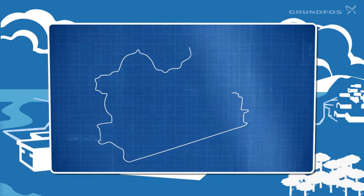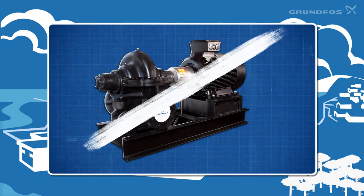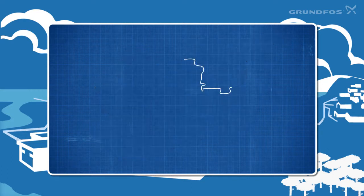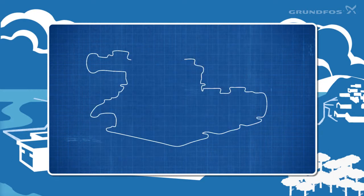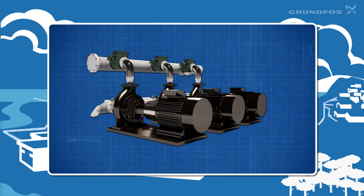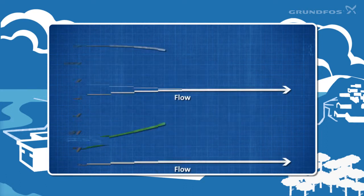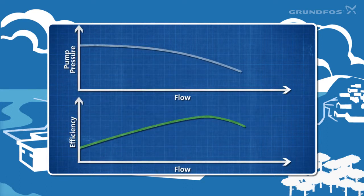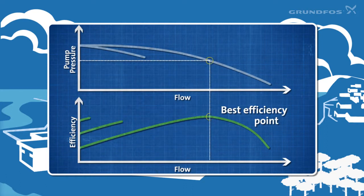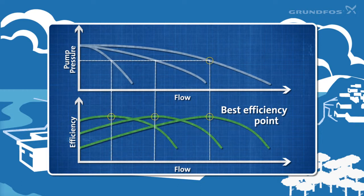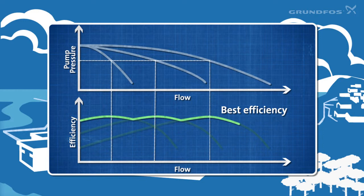Instead of a single large pump running at only one best efficiency point, you can use several smaller pumps, lowering energy consumption. Each of these pumps runs at its optimum efficiency and only when required. Combining multiple smaller pumps with intelligent pump control reduces up to 20% on energy consumption.